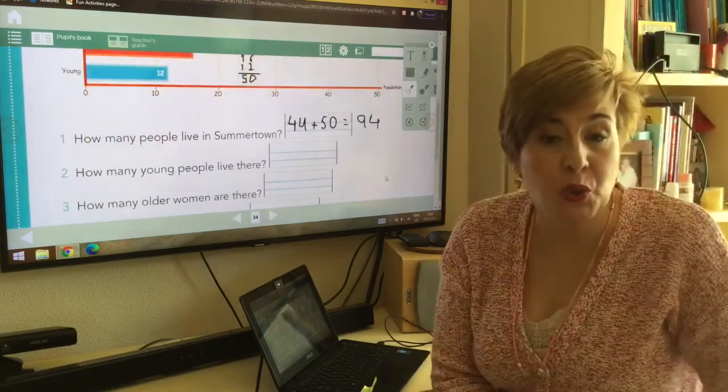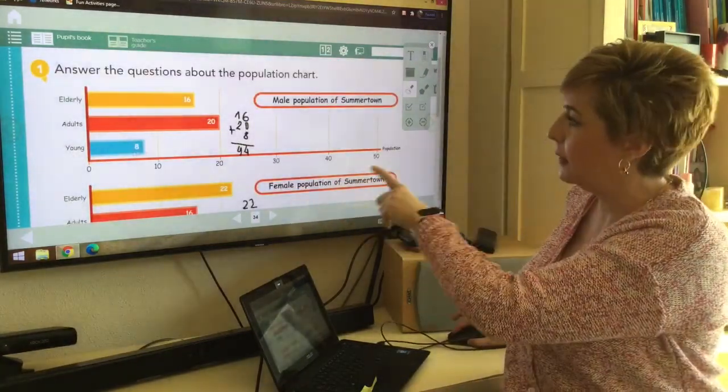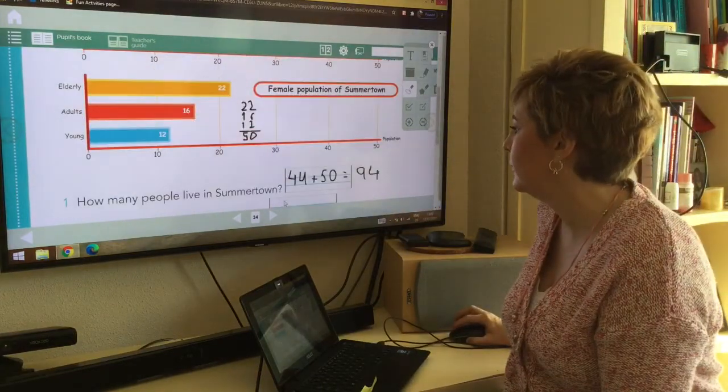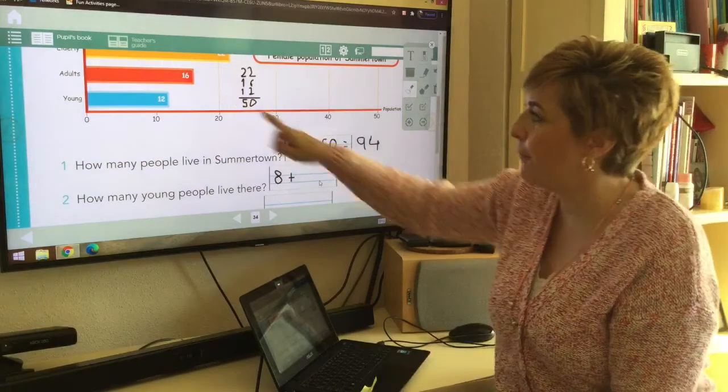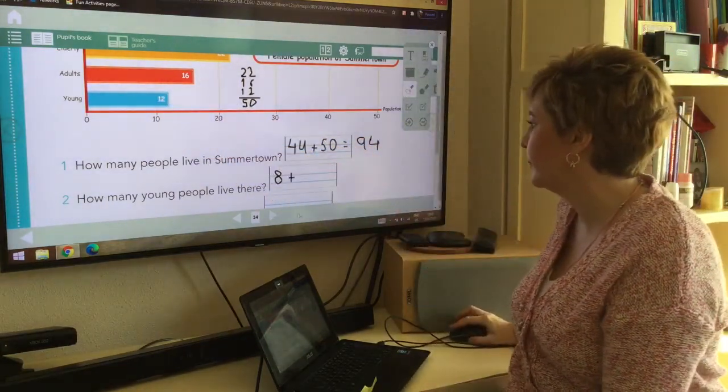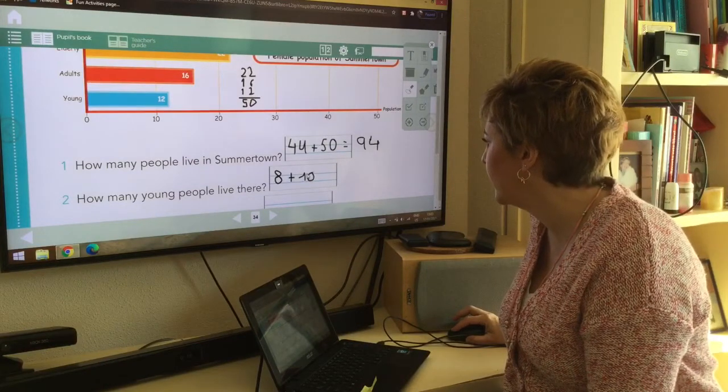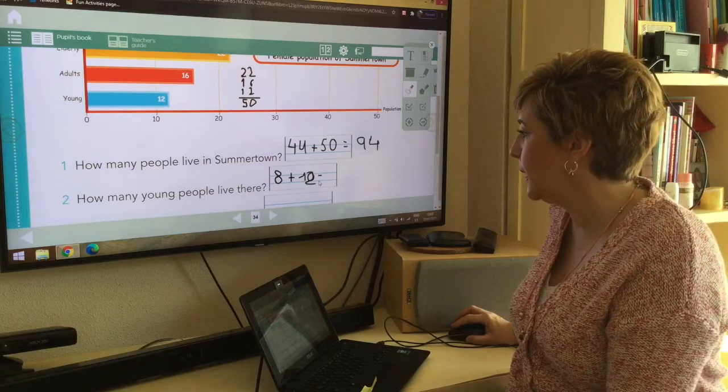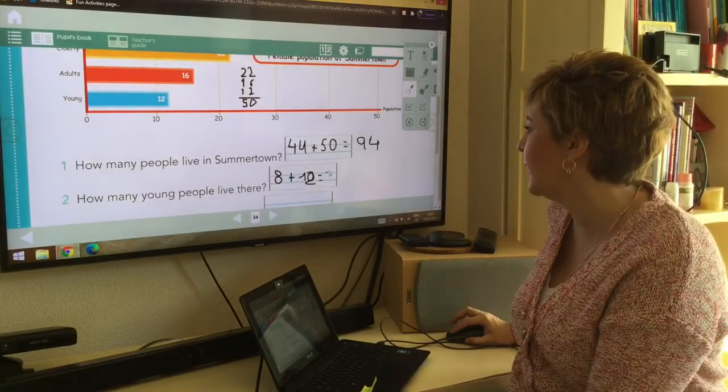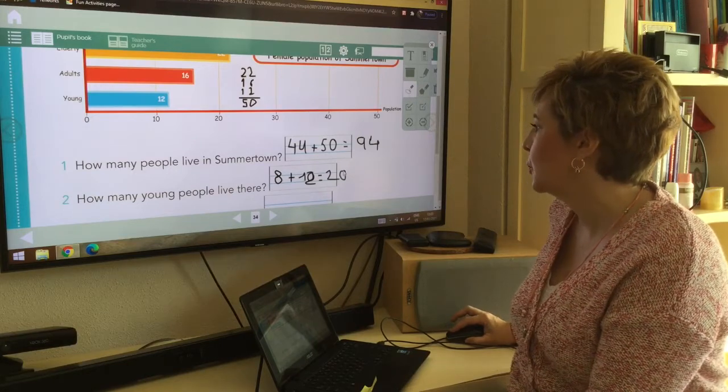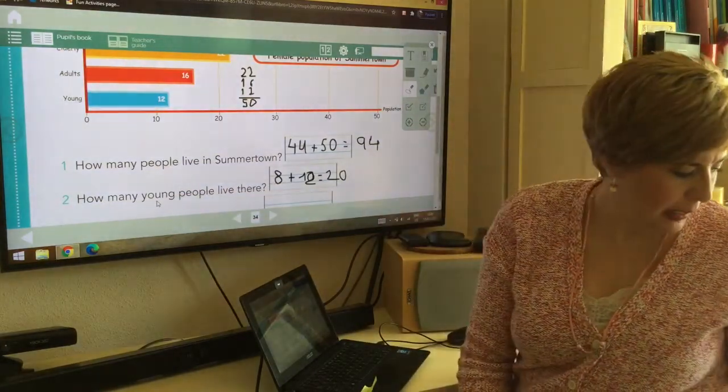Let's go to question number two. How many young people live there? We have young male, eight, and young female, twelve. Eight and twelve is going to be twenty. Twenty young people.